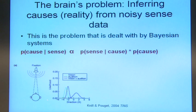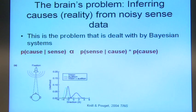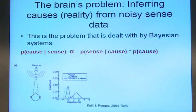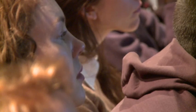Now let's say there's competing information from your auditory senses, suggesting that actually it's probably centred on plus 1 degrees, but with a wider distribution. The question is how you can integrate those two pieces of complementary information to make a best guess of where it really is.